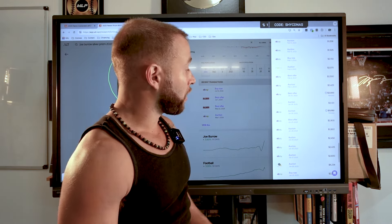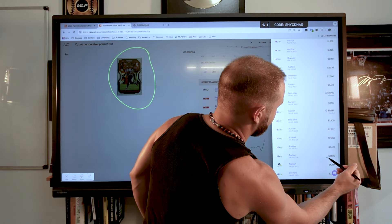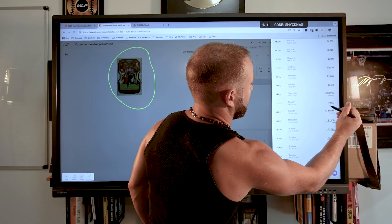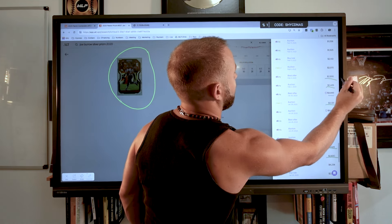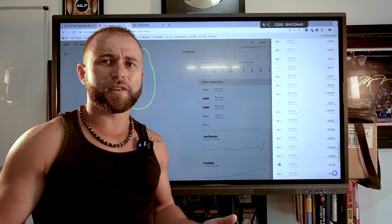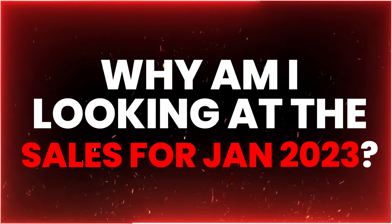You can see here in 2023 what this card was selling for in January, right? It was selling for about $2,600, $2,400, $2,800, $2,900, $3,100, $2,400, $2,500, right? So if you average that out, it sells for about $2,500, $2,600. And why am I looking at the sales in January of 2023?